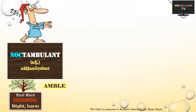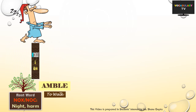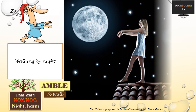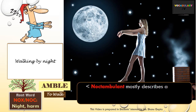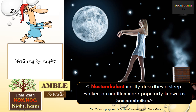Next we have the word Noctambulant. In this word we have suffixed the root amble meaning to walk with our base root. Noctambulant describes someone who walks by night and could describe a thief or a rogue who carries out his activities by night. But since at night people are supposed to be asleep, the more general meaning in which it is used now is that of a sleepwalker, another word for which is Somnambulism.